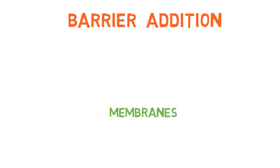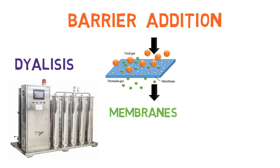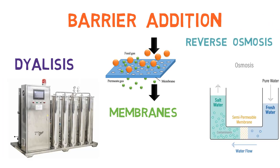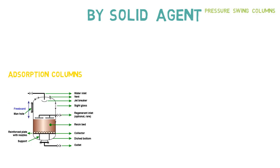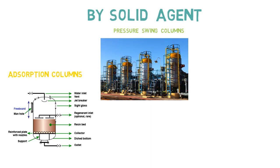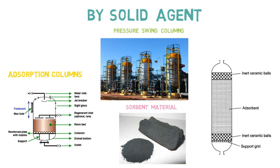We then continue with barrier addition, which is essentially the use of membranes in processes — for instance, dialysis, reverse osmosis, or gas permeation. Afterwards, we continue with separation by solid agent, for instance adsorption columns, pressure swing columns, and more importantly, some sorbent materials and their applications, such as activated carbon.